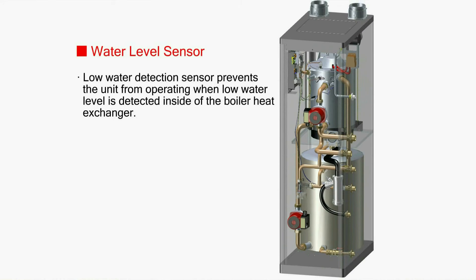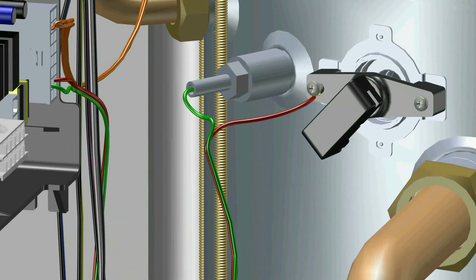Water level sensor. If water is leaked inside pipes, it would sense low water level and then stop the boiler from operating.